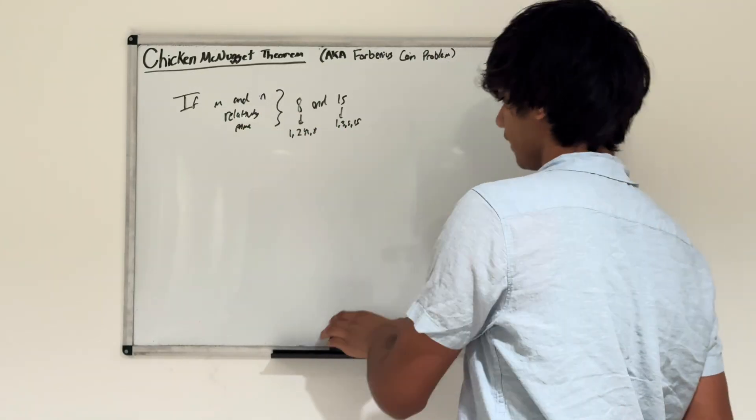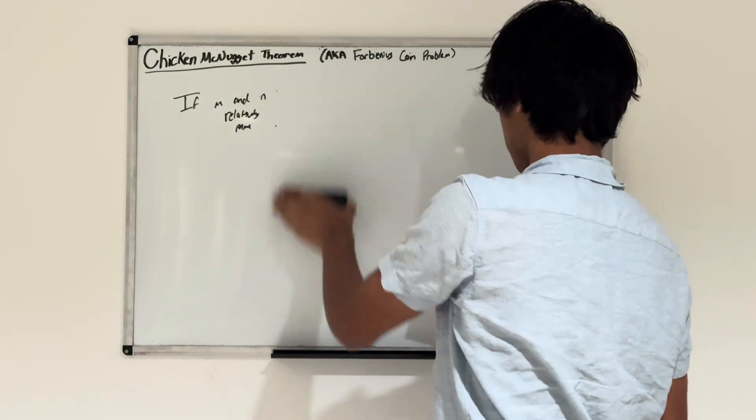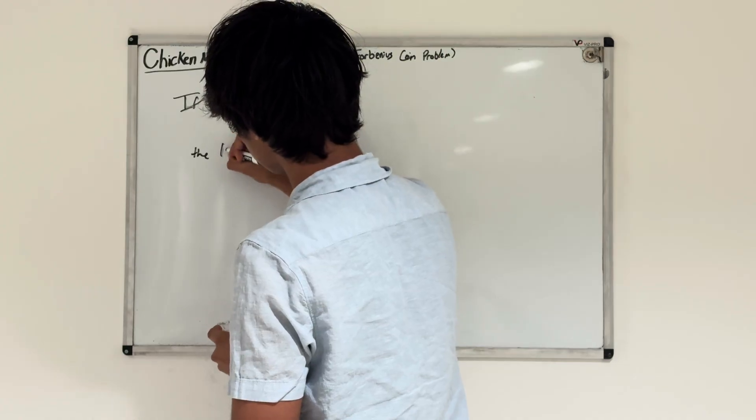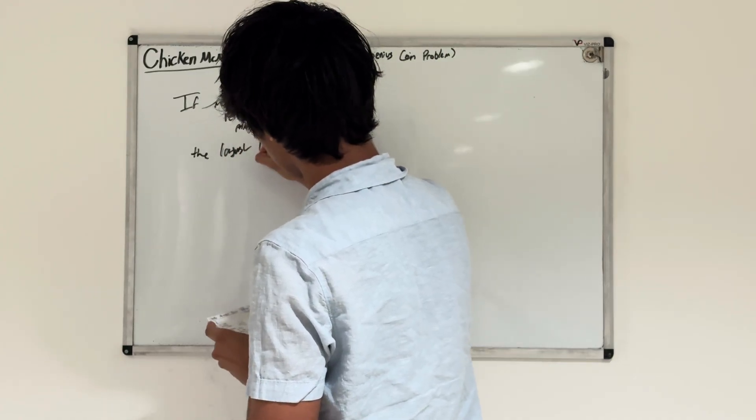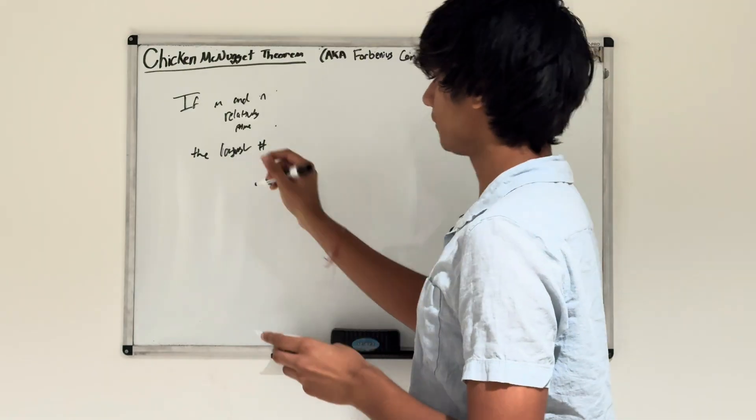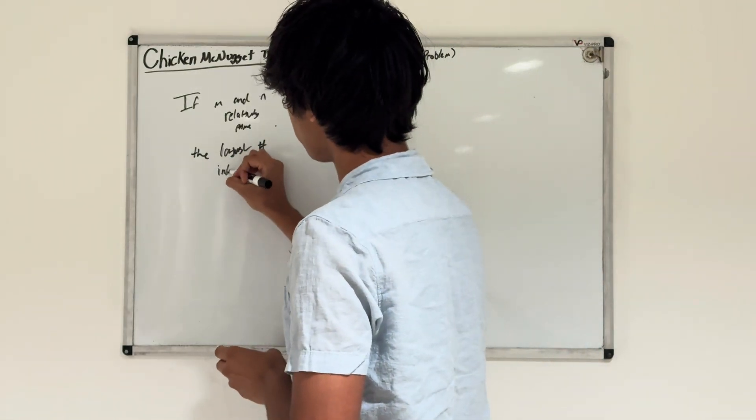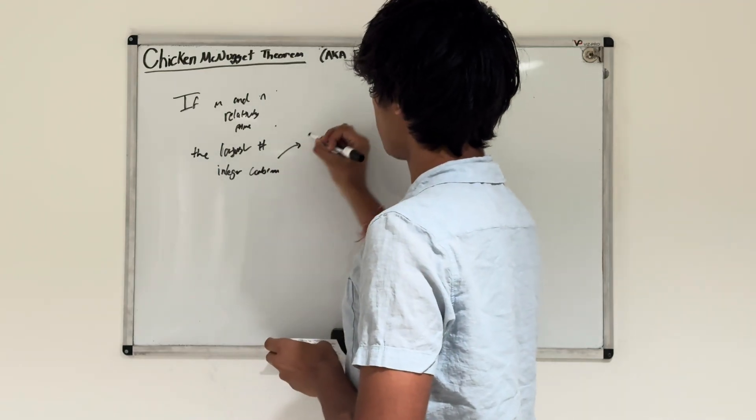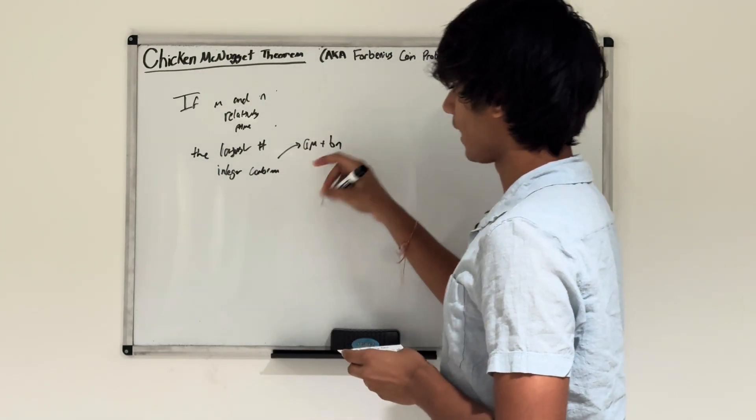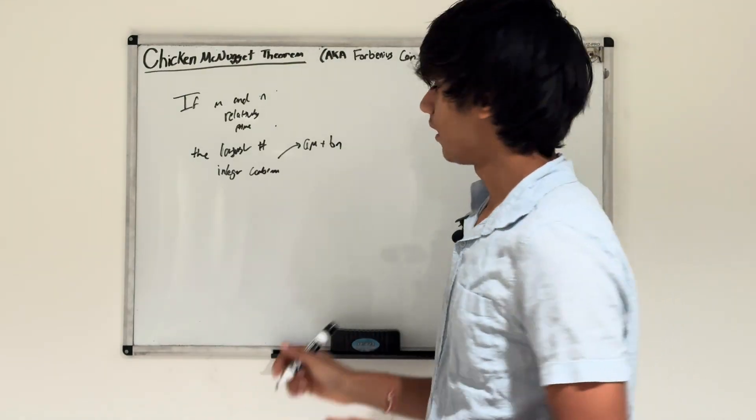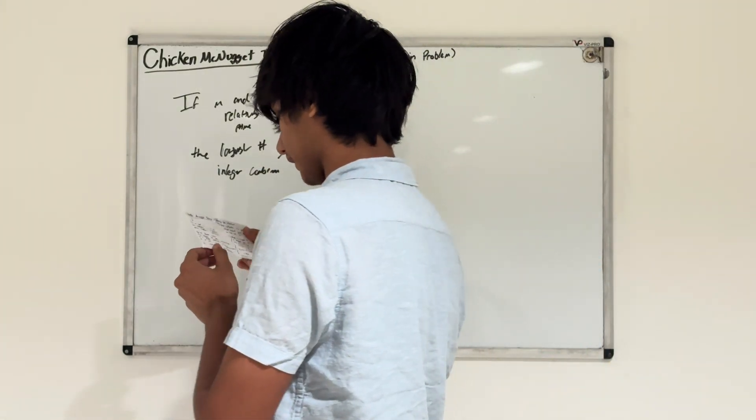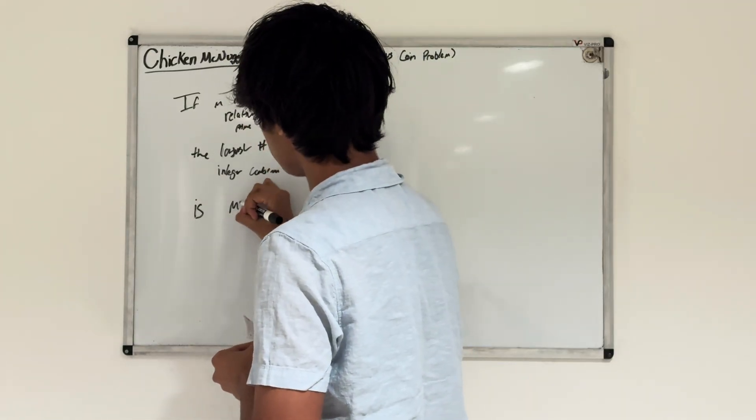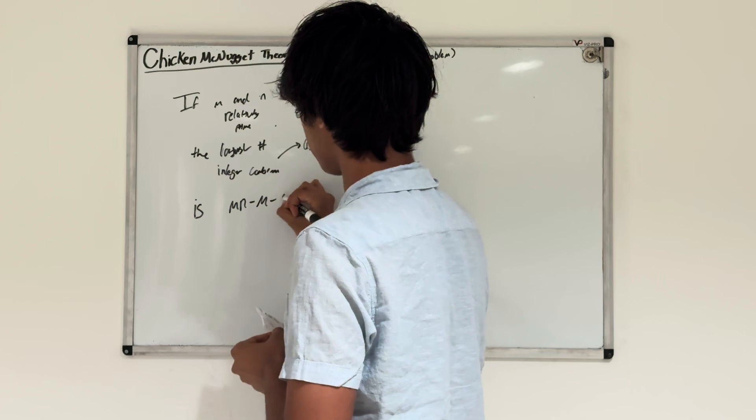Given these two numbers m and n that are relatively prime, the largest number that cannot be created as a combination of m and n - in other words, the largest number that can't be written in the form a·m + b·n where a and b are constants - is m·n - m - n. And that's the theorem.